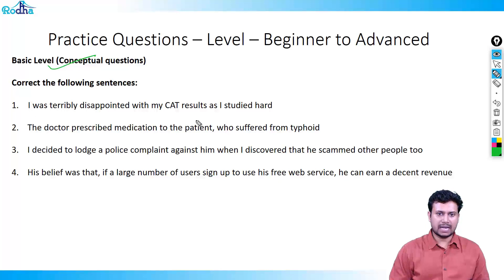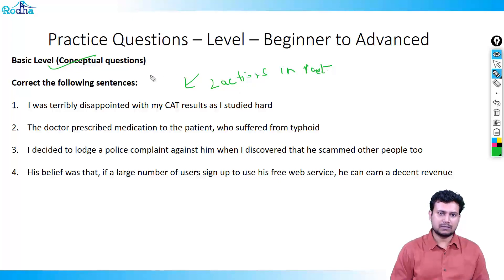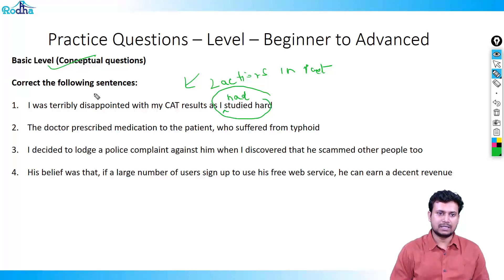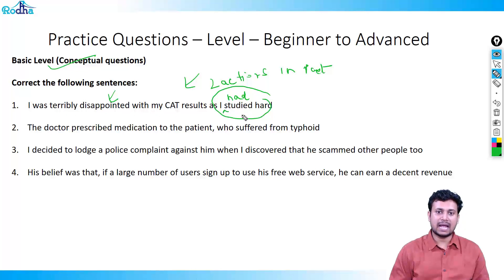The sentence is: 'I was terribly disappointed with my CAT results as I studied hard.' There are two actions in the past, and as we covered in the concept videos, the first action should use 'had'. Studying hard is the first action, so it should be 'had studied'. The right answer is: I was terribly disappointed with my CAT results as I had studied hard.